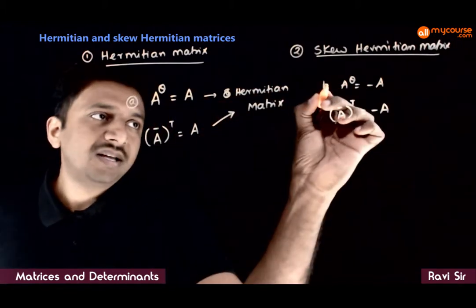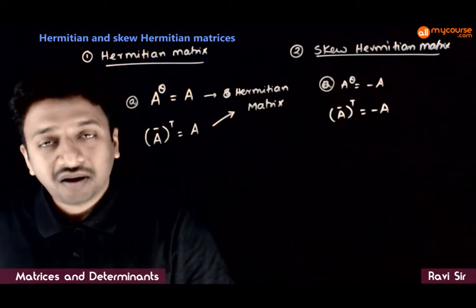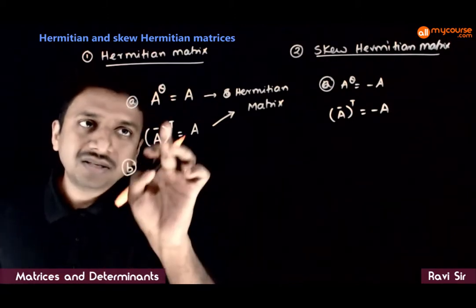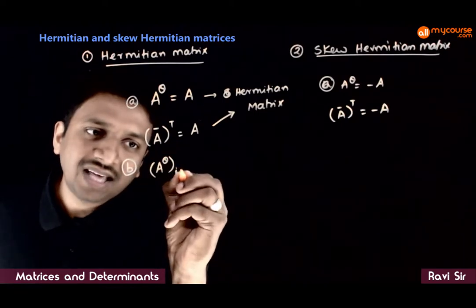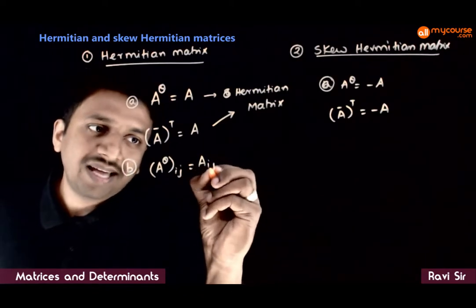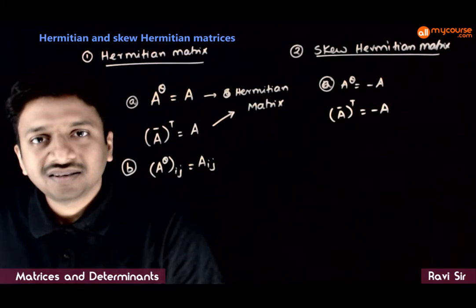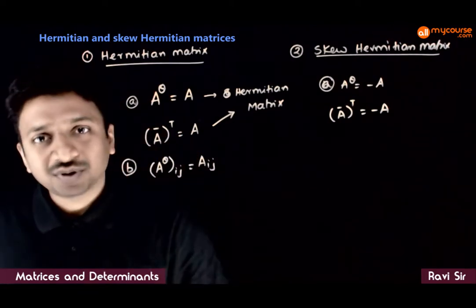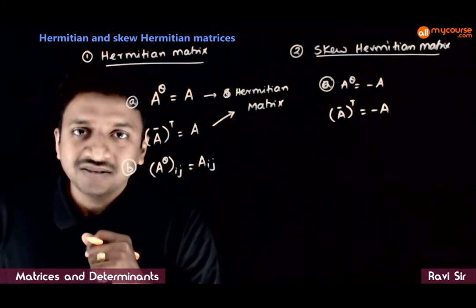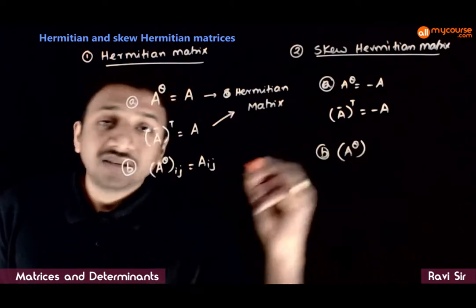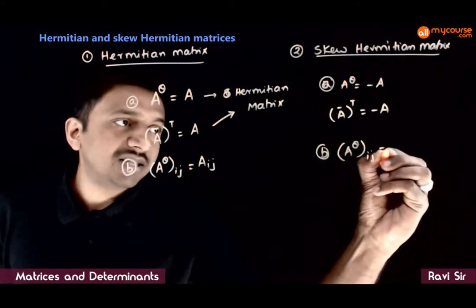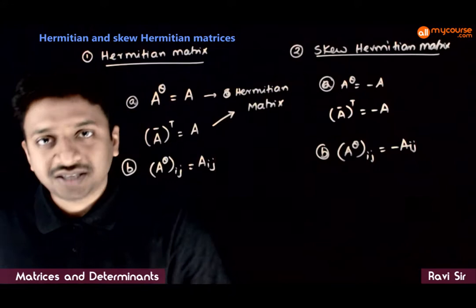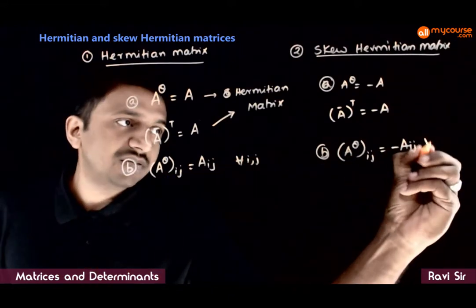This is one way to look at Hermitian and skew Hermitian matrices. In another way, in terms of the positional representation of elements: if the (i,j)th element of A^θ is exactly equal to the (i,j)th element of A, we call it a Hermitian matrix. If the (i,j)th element of A^θ equals minus the (i,j)th element of A, we call it skew Hermitian. This has to be valid for all i and j.